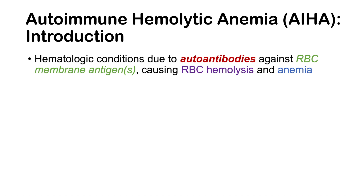Autoimmune hemolytic anemia is a hematologic condition due to autoantibodies against red blood cell or RBC membrane antigen or multiple antigens that cause the red blood cell to hemolyze and causes anemia after prolonged hemolysis. It is a type of hemolytic anemia, but with an autoimmune cause. I have an entire lesson on hemolytic anemia, so please check out that lesson for more details.